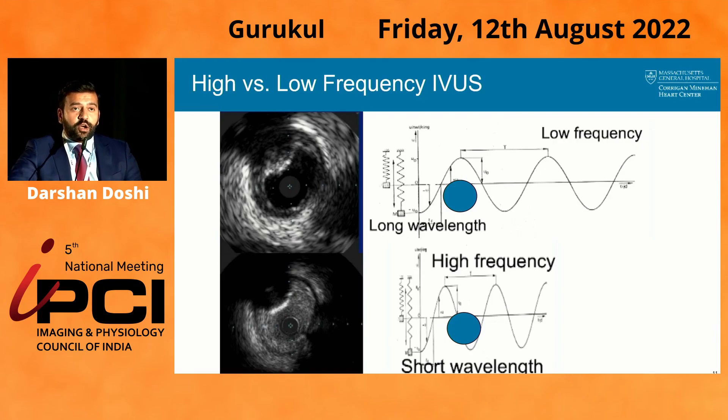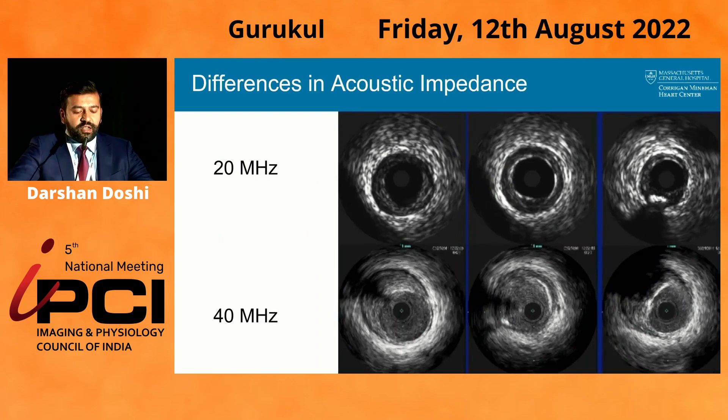However, this comes at a cost. When you start bouncing off of things, you lose penetration power. With the 20 MHz transducer you can see farther out — there's greater penetration. Compared to the higher-frequency IVUS, there is lower penetration, and you're less likely to see the adventitia and beyond.